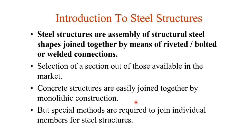That is the definition of steel structures. Regarding selection of a section, we choose from those available in the market. For example, if only I-sections or W-sections are available and other sections like C-section or angle section are not available, then we design our structures based on the sections available in the market.